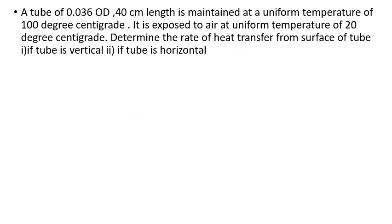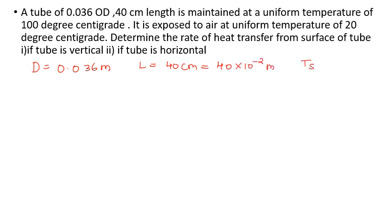A tube of 0.036 m OD and 40 cm length is maintained at a uniform temperature of 100°C and is exposed to air at a uniform temperature of 20°C. Determine the rate of heat transfer from the surface of the tube when the tube is vertical and when the tube is horizontal. Diameter D = 0.036 m, length L = 40 × 10⁻² m, T_surface = 100°C.